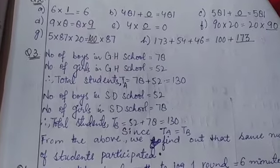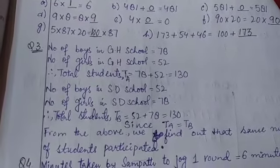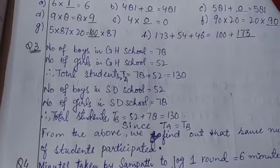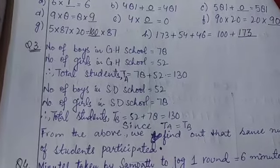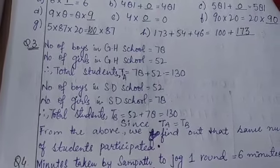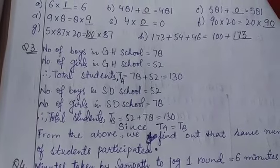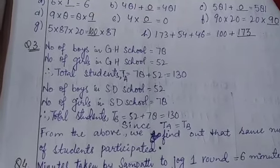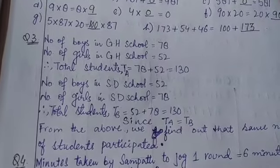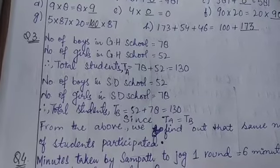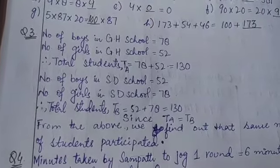Now see, number of boys in GH school: 78. Number of girls in GH school: 52. Therefore, total students TA, I've named it TA so that, since both are total students, just to differentiate between the two. So it is TA equals to 78 plus 52, that is coming out to be 130.